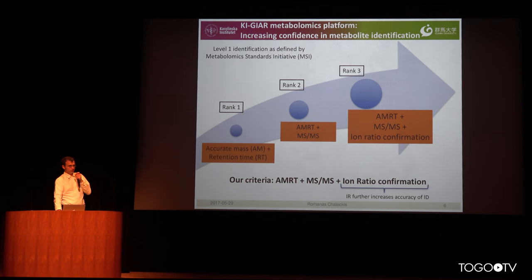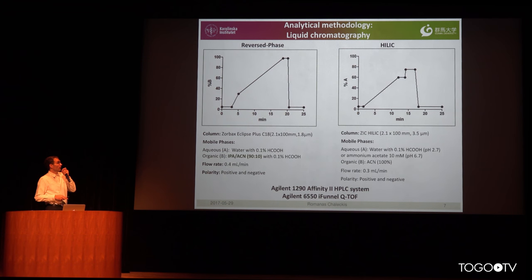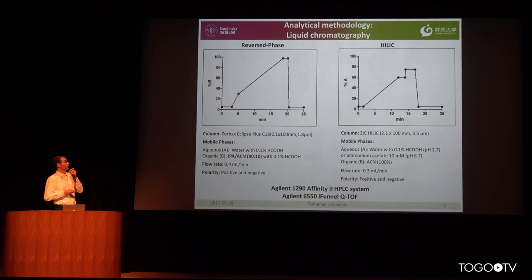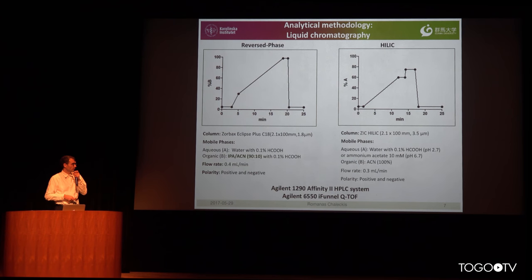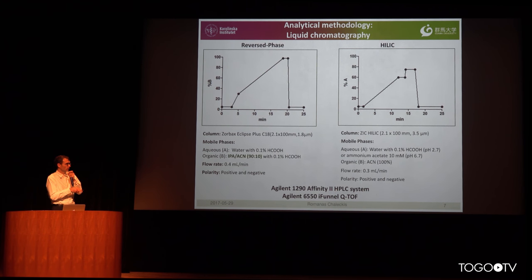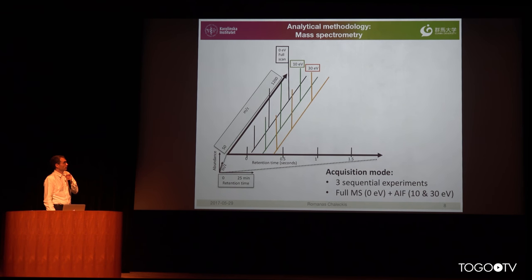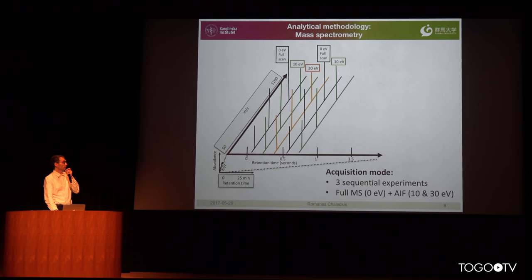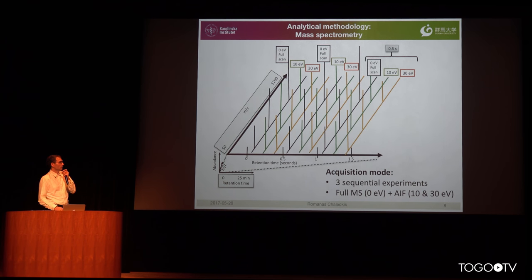Let me explain how our platform works in detail. For metabolite separation we use two chromatographies — reverse phase and HILIC phase — in positive and negative ionization mode. We use Agilent instruments, an Agilent QTOF, to perform the experiments.